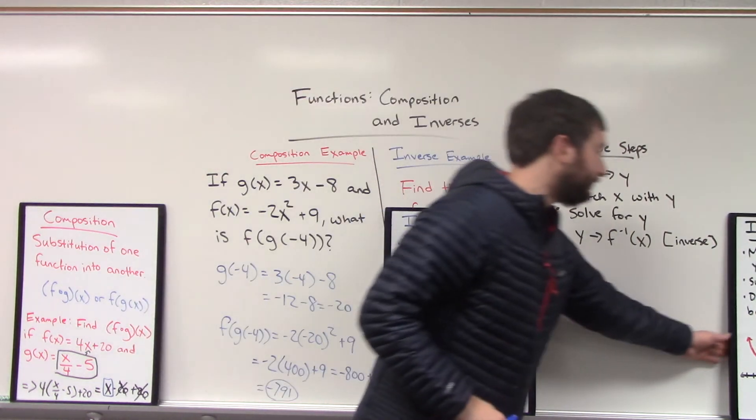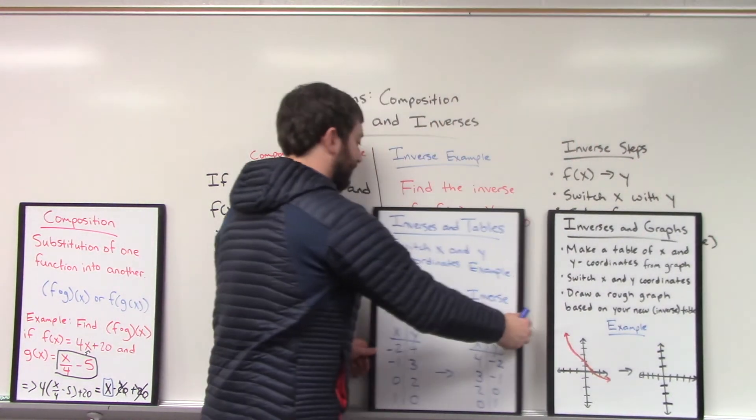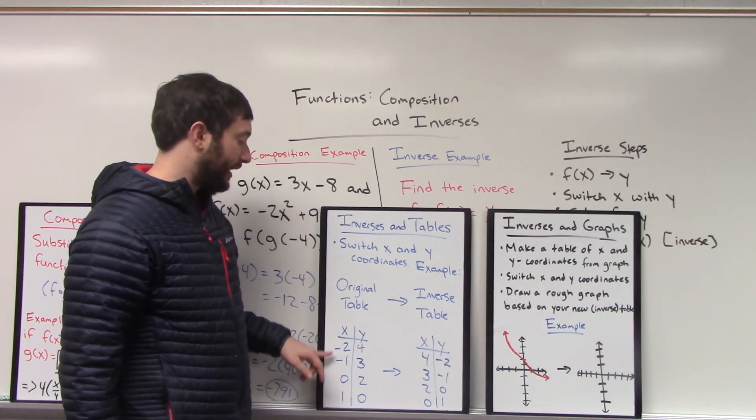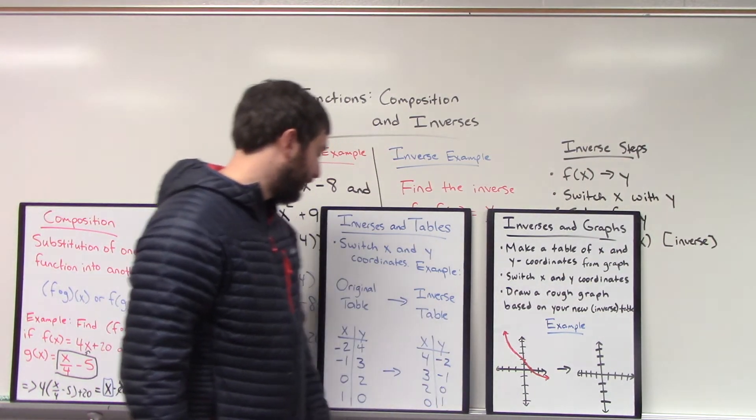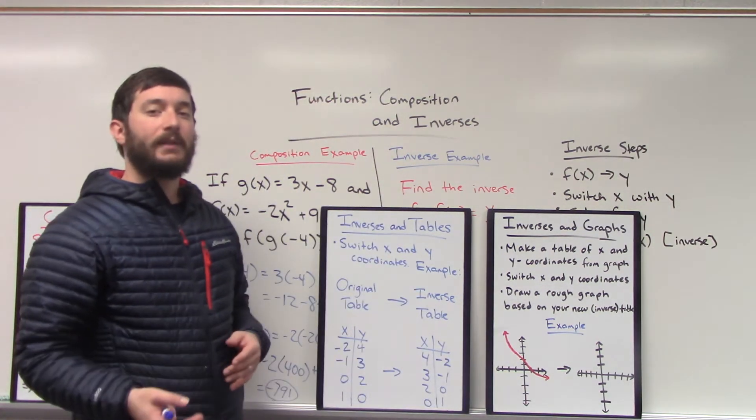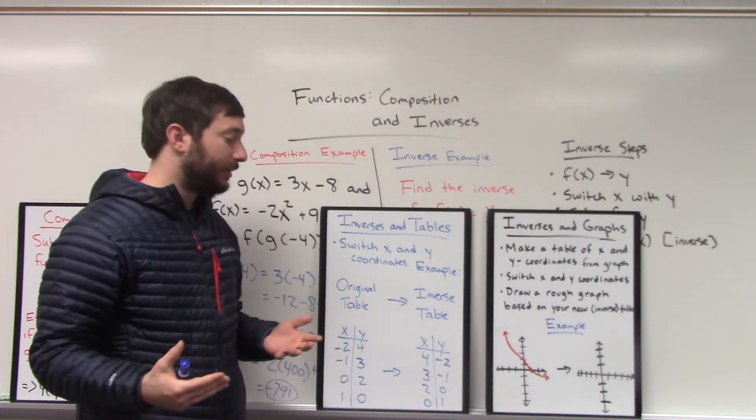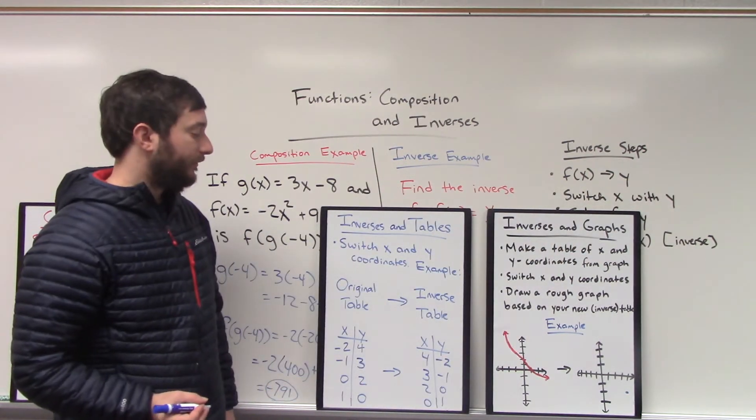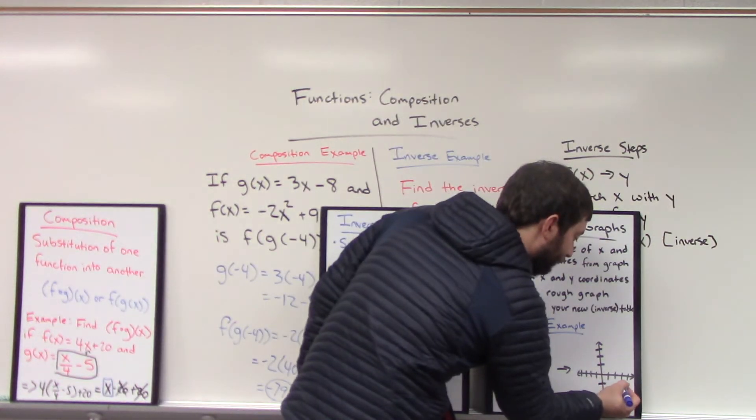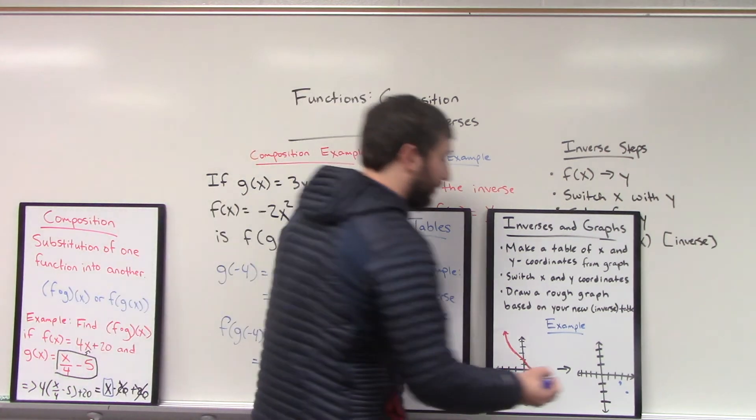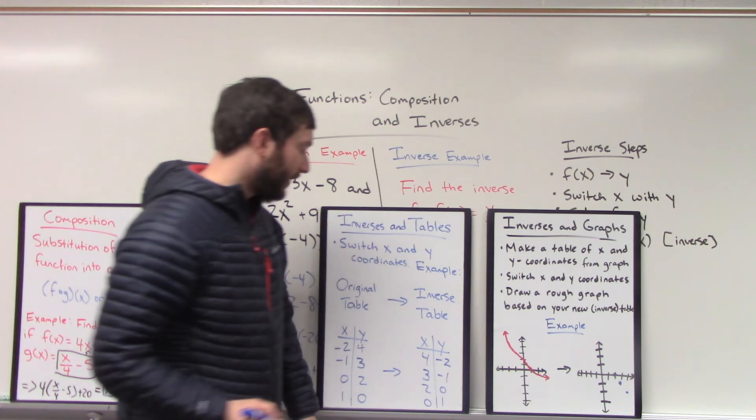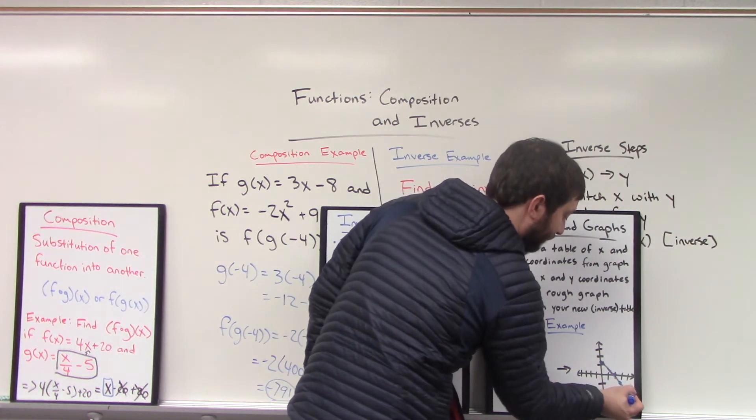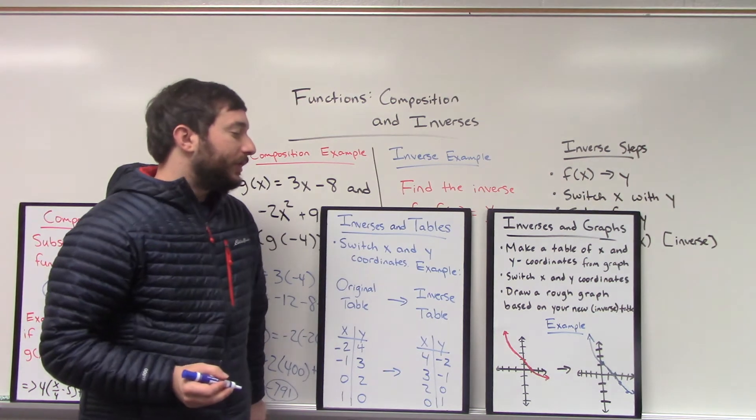For a graph, it'll be very similar. Let's pretend now that I have a graph and you'll notice that this graph's coordinate points matches our original table. Negative 2 comma 4, 1 comma 0. What's the inverse of that going to look like? Well, we have the coordinate points already listed. 4 comma negative 2. This will be a coordinate point of our inverse function in its graph. 3 comma negative 1. 2 comma 0. This crosses the x axis here at 2 comma 0. 0 comma 1. And if I roughly sketch this graph, it turns out that this is symmetric about the origin.